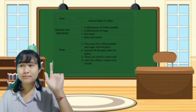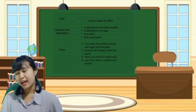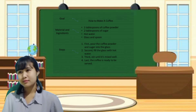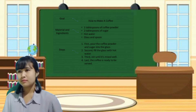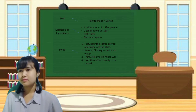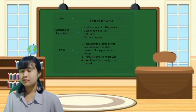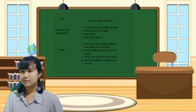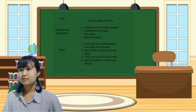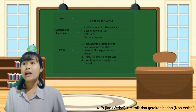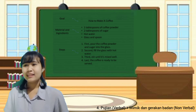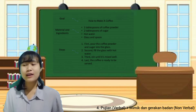Can I, miss? Of course. Please, Diana. From the example, I can know that procedure text is using temporal conjunction such as first, second, third, and last. And another language feature is the use of imperative sentences such as pour the coffee powder and sugar, fill the glass with hot water, and stir until it mixes well. Brilliant, Diana. Your answer is very good. Give applause to Diana.